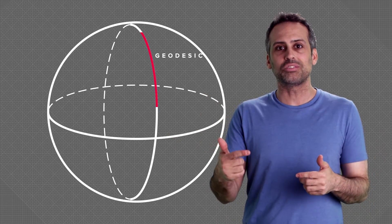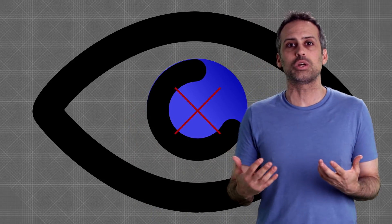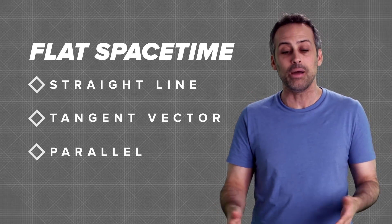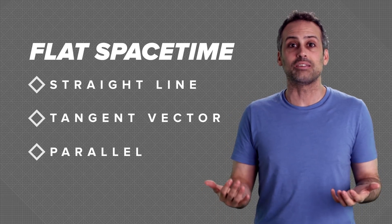Eventually, we want to do the same thing in curved spacetime. However, tiny patches of curved spacetime don't look Euclidean. They look like flat spacetime, which, although not curved, still has a geometry that doesn't always agree with our visual intuitions. So we won't know what to do in each tiny patch unless we first understand what straight line, tangent vector, and parallel mean in flat spacetime. Clarifying that is the goal of today's episode.